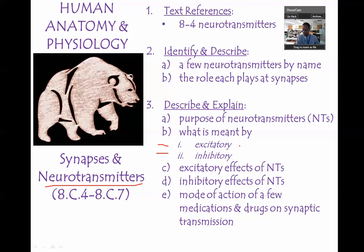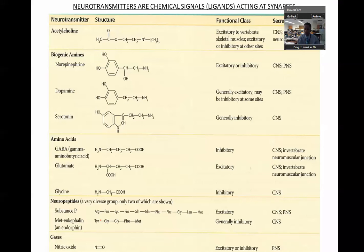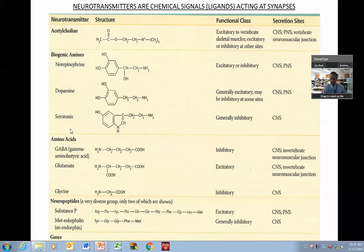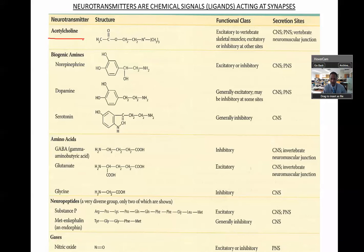Meaning, this neurotransmitter says "pass this message on" — that's excitatory. Or it says "don't pass that message on" — that's the inhibitory one. Here's an example of some neurotransmitters, and I put them throughout this PowerPoint. I would definitely pause. We're going to probably focus on acetylcholine and we'll talk about GABA. There are some other ones too.